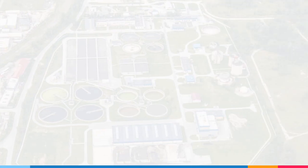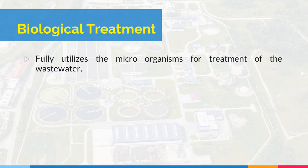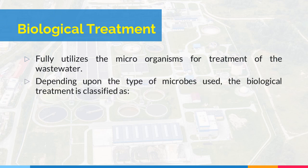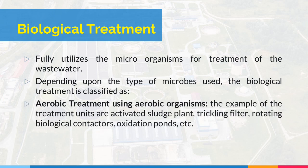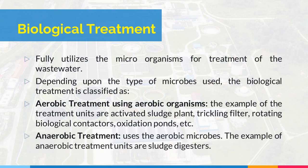Let's proceed with biological treatment. It fully utilizes microorganisms for treatment of wastewater. Depending upon the type of microbes used, the biological treatment is classified as follows. The first is aerobic treatment, using aerobic organisms. Examples of treatment units are activated sludge plant, trickling filter, rotating biological contactors, oxidation ponds, and others. The second is anaerobic treatment, which uses anaerobic microbes. Examples of anaerobic treatment units are sludge digesters.